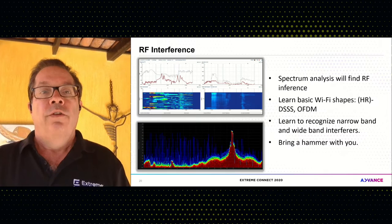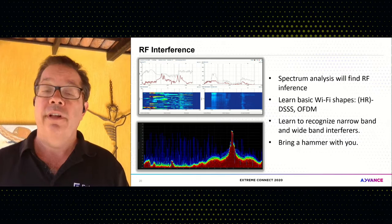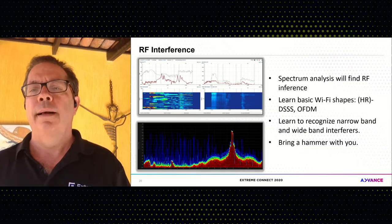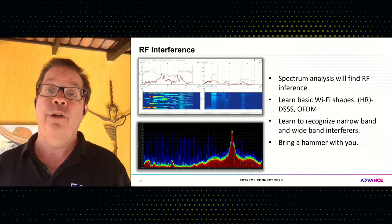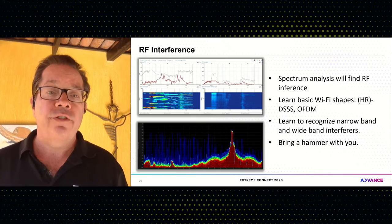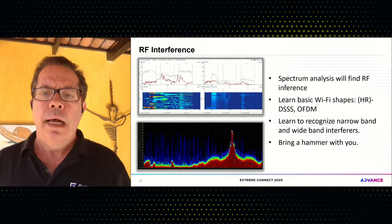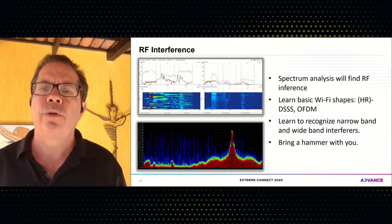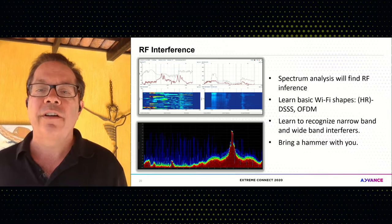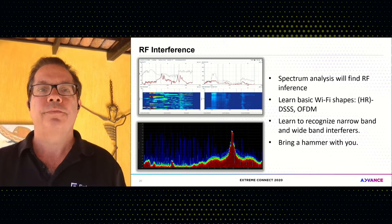Still at layer one — RF interference is obviously a big cause of layer one problems, more so in the 2.4 band because there are far more interferers there than in the 5 GHz band, though interferers exist there too. I highly recommend owning a spectrum analyzer. There are some really good ones: the Ekahau Sidekick and the MetaGeek Wi-Spy are both great. They will help you identify different kinds of interferers, especially during initial design. Identify those RF interferers and eliminate them so they don't affect your wireless network.